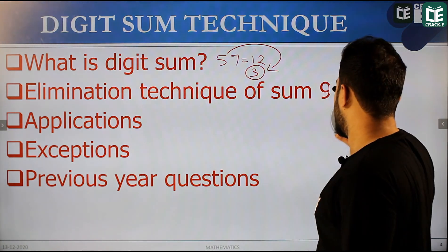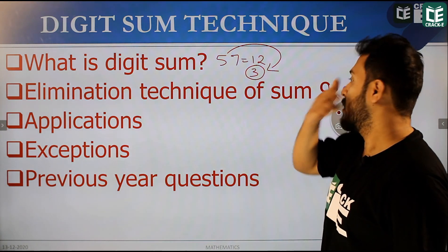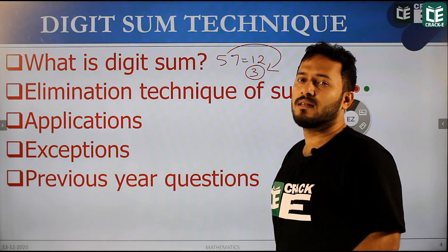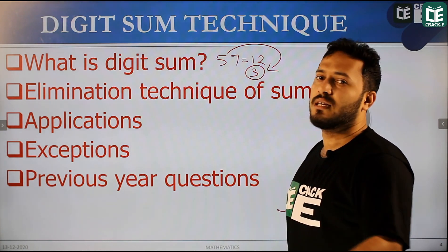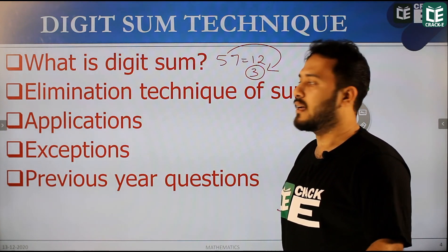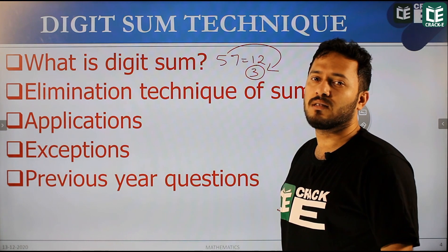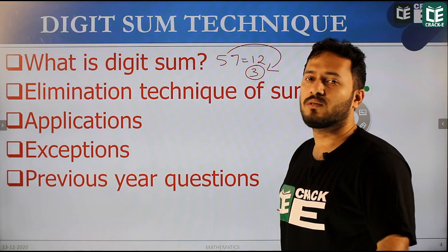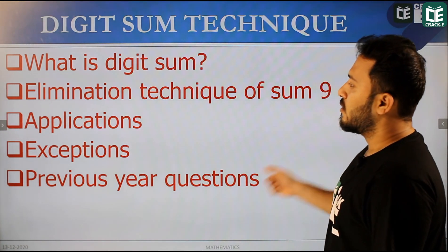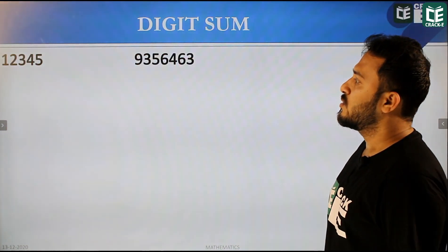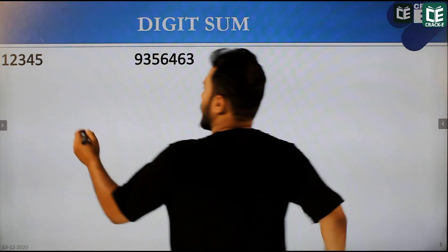These things involve the digital sum. There are a number of techniques: simplification techniques and elimination techniques by 9, and their applications and exceptions. So 1, 2, 3, 4, 5 — and the number's digital sum.